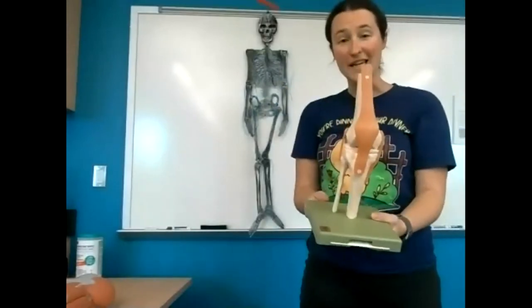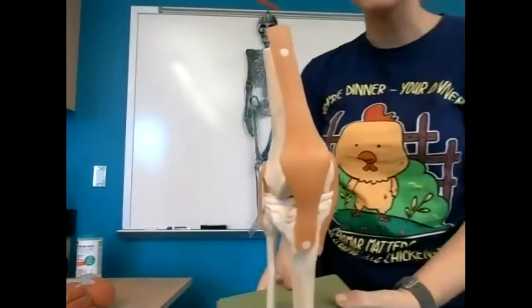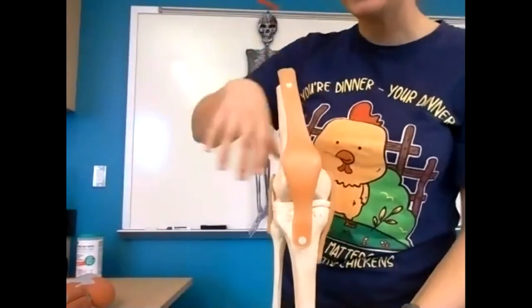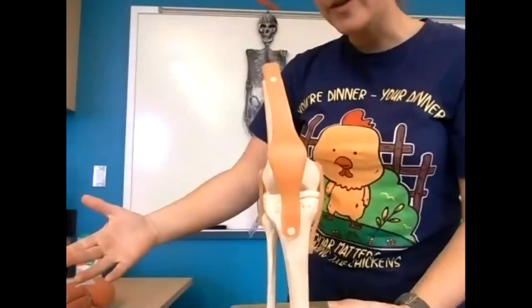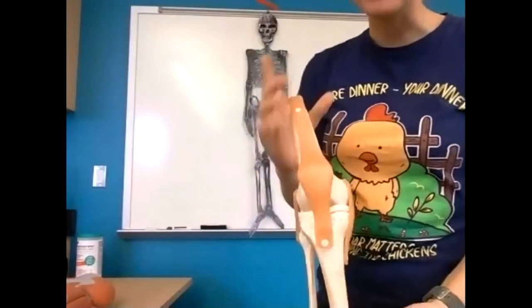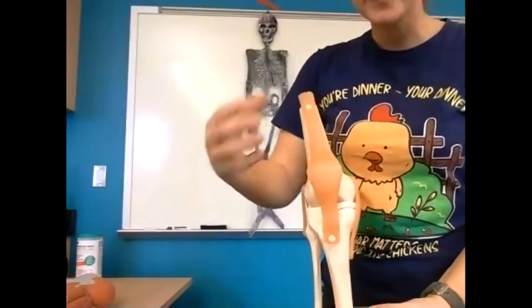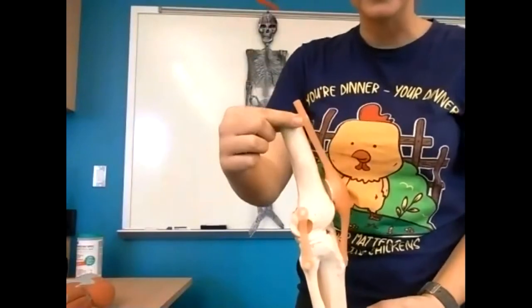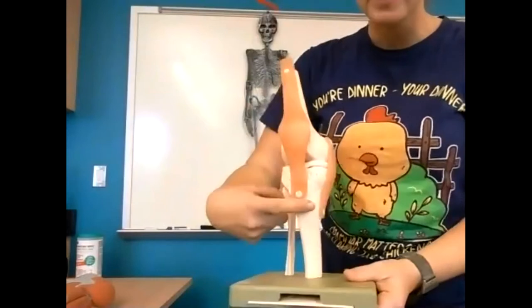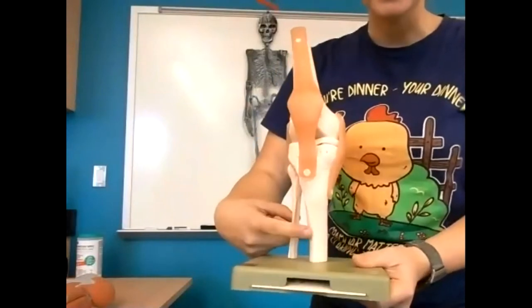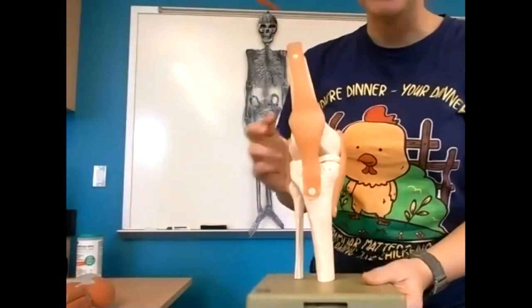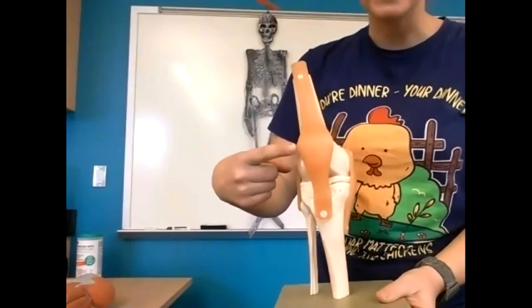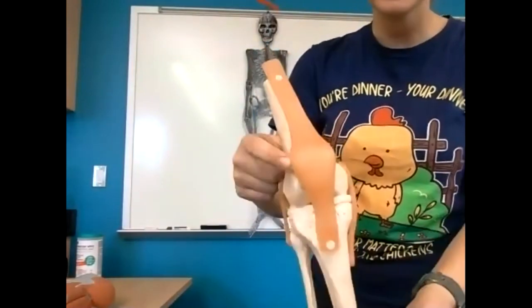This is the knee — something you'll study in detail starting with exam three material. For now, just for a little orientation: this bone up here is the femur, the thigh bone. This is the shin — the tibia — and the skinnier one is the fibula. This is the patella, or the kneecap.